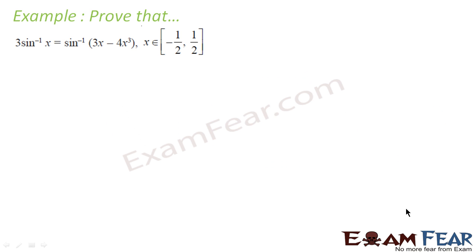Let's take some examples here to prove that 3 sin⁻¹x is equal to sin⁻¹(3x − 4x³), where x is between −1/2 to 1/2. This is a little tricky question, so please pay attention. We have to prove that 3 sin⁻¹x is equal to sin⁻¹(3x − 4x³).